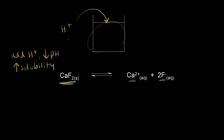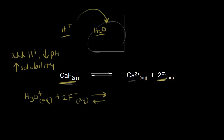Let's see if we can figure out what happened. If we're adding H plus, we know we have H₂O present, so H plus and H₂O give us H₃O plus — hydronium ions in solution. We also have fluoride ions in solution, and fluoride can function as a base. So the fluoride anions react with hydronium: hydronium donates a proton and fluoride accepts it, forming two HF and two H₂O.